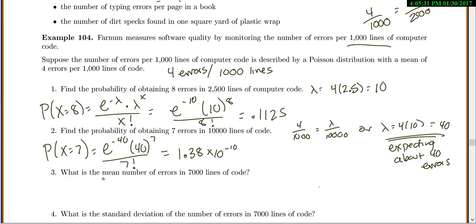What would be the mean or expected number of errors in 7,000 lines of code? So again, you have to find λ first. So λ is going to be 4 times 7, which is 28. The expected value of X is always, again, very easy. It's just λ, so we get 28.